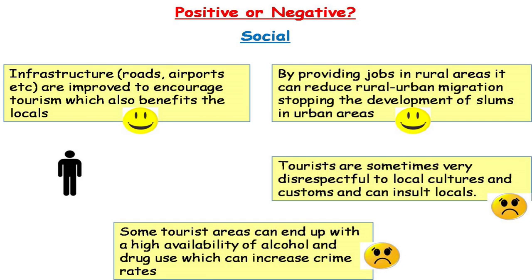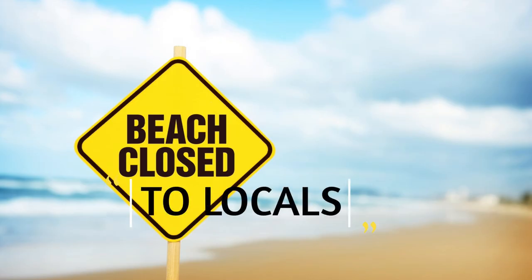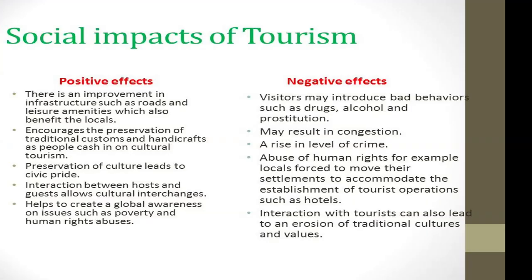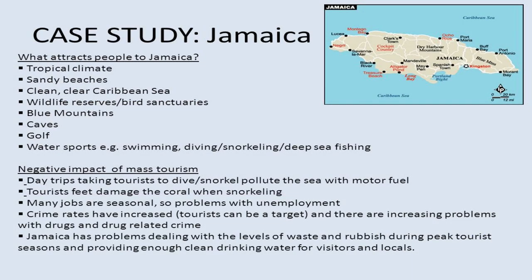Those are some of the problems affecting the tourism industry — from environmental pollution to the demonstration effect to the illicit drug industry. There is also the problem of crime: locals who perceive tourists as rich and lavish may attempt to rob them. Some crime is actually created in tourist areas and affects the country as a whole.